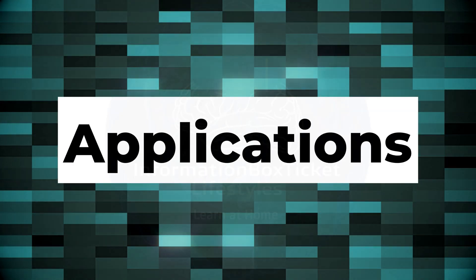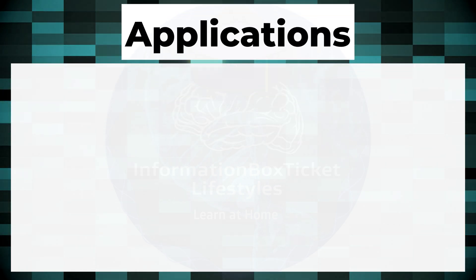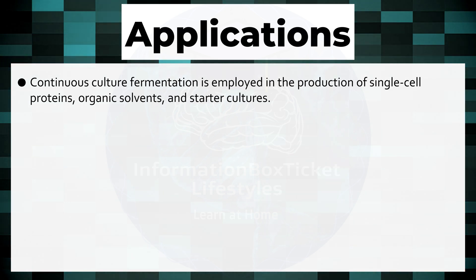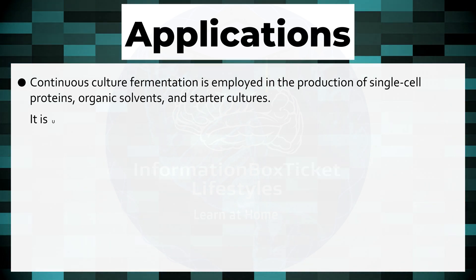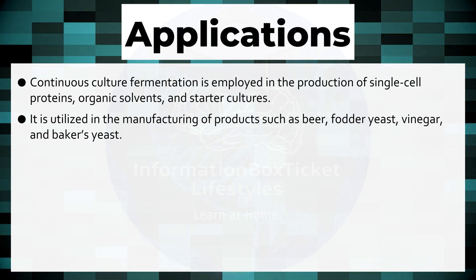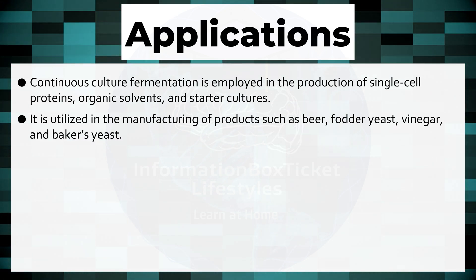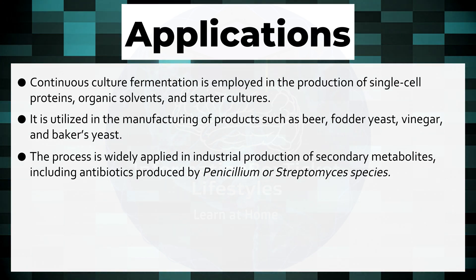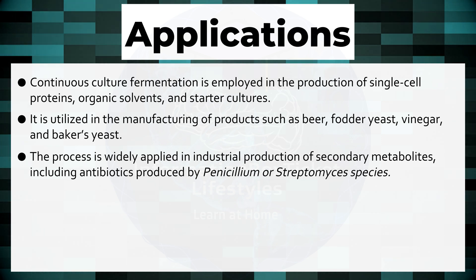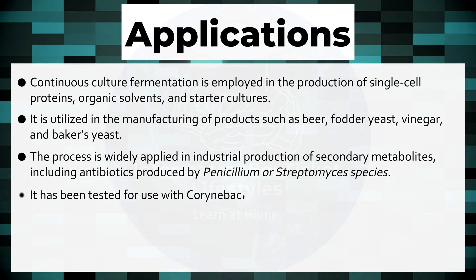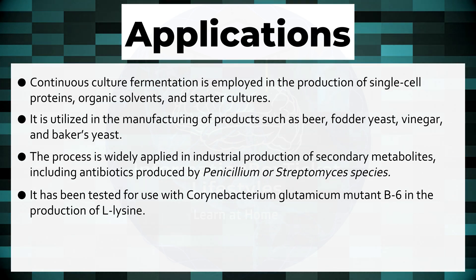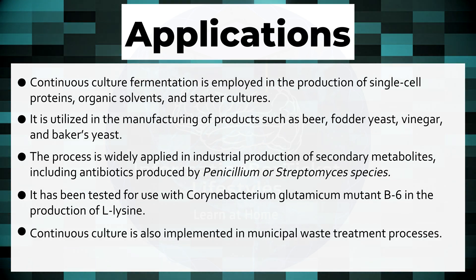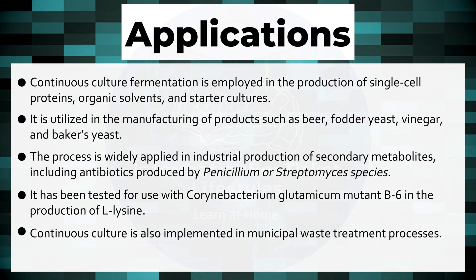Applications of Continuous Culture. Continuous culture fermentation is employed in the production of single-cell proteins, organic solvents, and starter cultures. It is utilized in the manufacturing of products such as beer, fodder yeast, vinegar, and baker's yeast. The process is widely applied in the industrial production of secondary metabolites, including antibiotics produced by Penicillium or Streptomyces species. It has been tested for use with Corynebacterium glutamicum mutant B-6 in the production of L-lysine. Continuous culture is also implemented in municipal waste treatment processes.